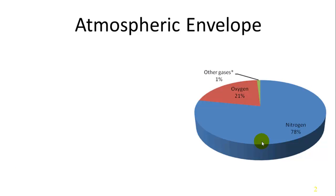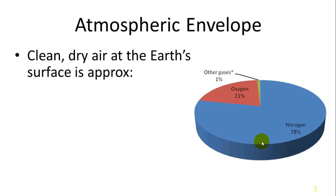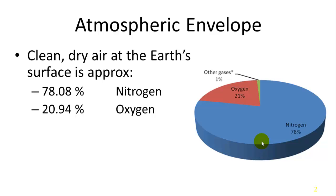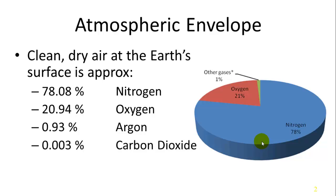The atmosphere is a layer of air that surrounds the Earth. The further away you get from the Earth, the thinner it is. Our atmosphere at the Earth's surface is approximately 78% nitrogen, 21% oxygen, and then a small percentage of various other gases including almost 1% argon, 0.003% carbon dioxide, and then an even smaller percentage of ozone.